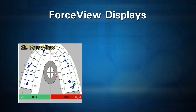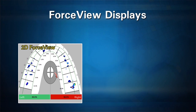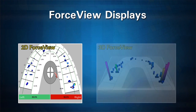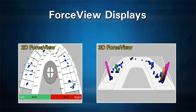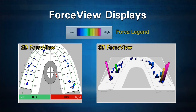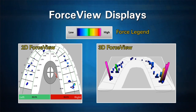T-Scan displays the digital force data in different ways. As you can see in this example, there is a 2D view that most closely resembles articulating paper marks. There is also a 3D view, which is a great tool for patient education because you can see the height of the column correlating with the intensity of the force. The software provides a force legend that shows different force levels graphically displayed by color coding, from lowest forces in blue through middle forces green and yellow, up to the highest forces pink and red.